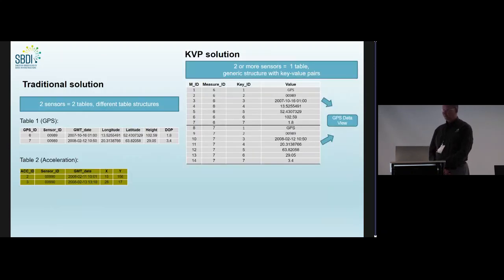To get around this, we are using the key value pair solution, which means that we, instead of having different tables, we have one single generic table structure, where we just keep track of the key and value pairs, which order they are in a kind of lookup table. And then we can put everything you have on the GPS table into the generic table.